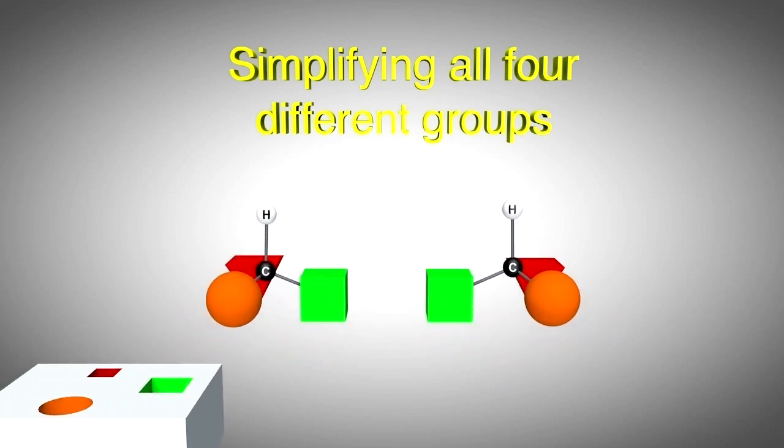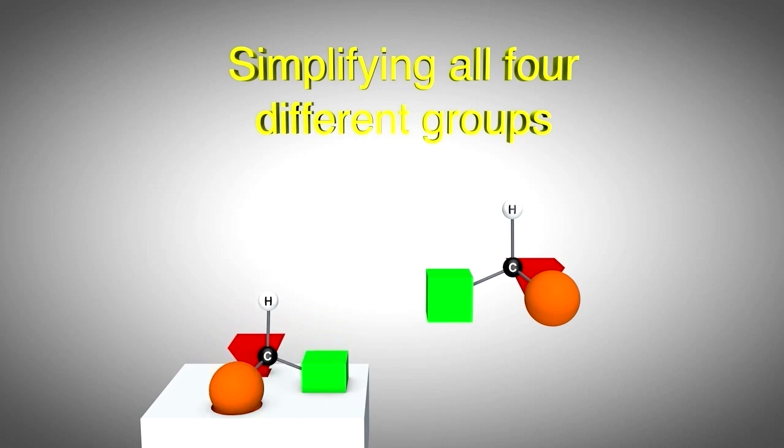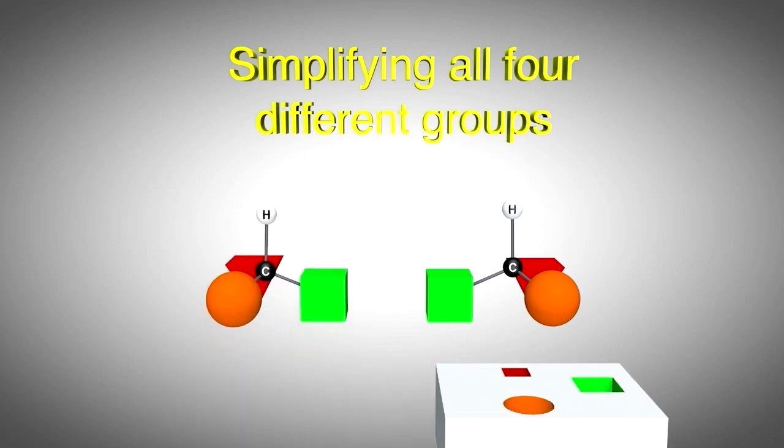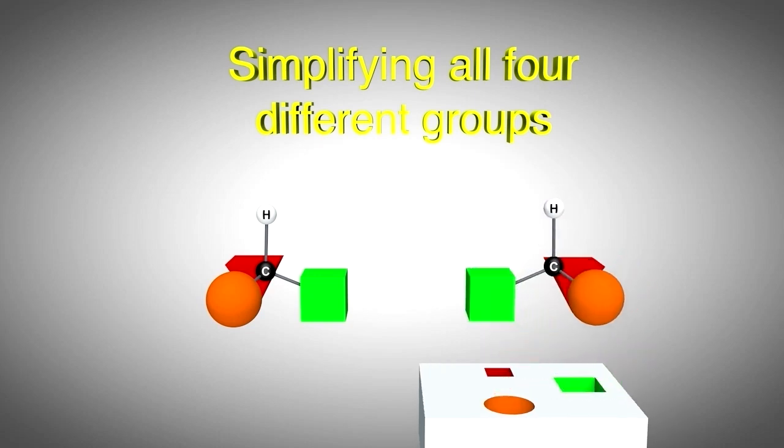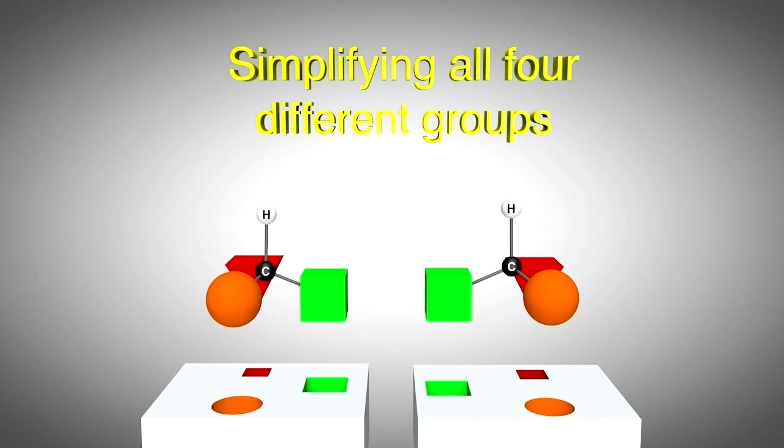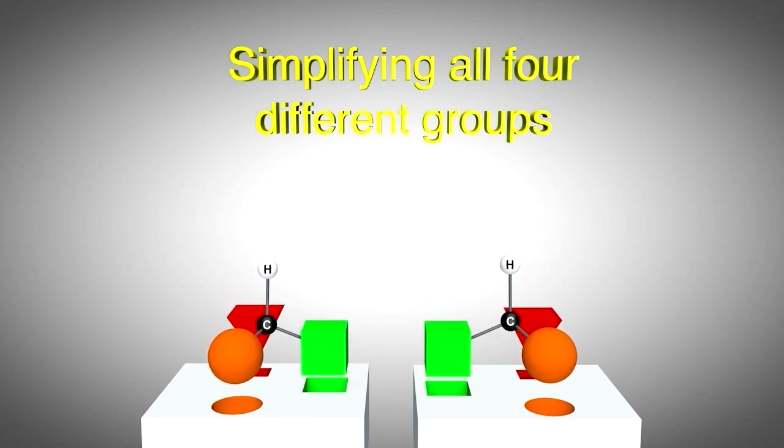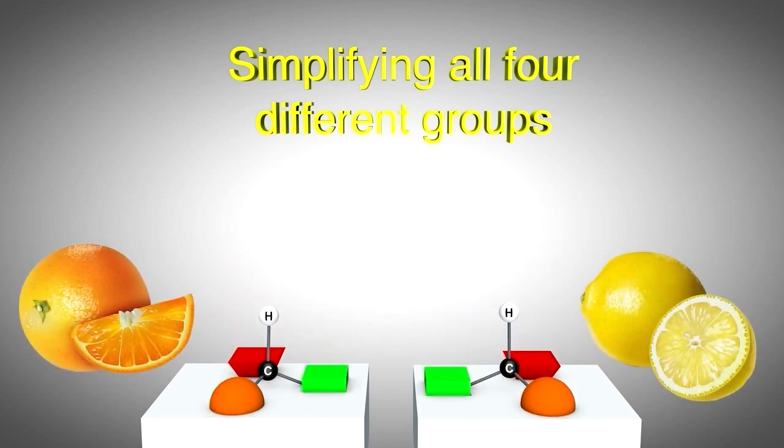The molecule on the left can clearly fit into the abstract receptor shown while the molecule on the right does not fit. However, a different receptor does exist that allows the molecule on the right to fit. Interestingly, the enantiomer on the left triggers the smell of oranges within the receptors of our nose and the enantiomer on the right triggers the smell of lemons.